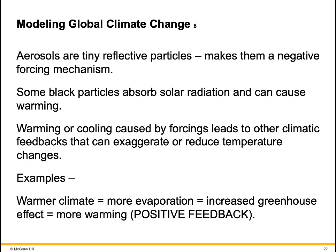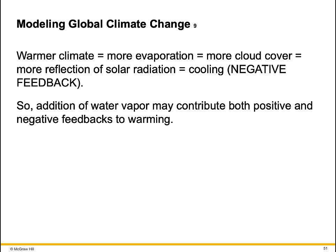Warming or cooling caused by forcings leads to other climatic feedbacks that can exaggerate or reduce temperature changes. Example of positive feedback: a warmer climate leads to more evaporation, which leads to increased greenhouse feedback and more warming. Example of negative feedback: a warmer climate leads to more evaporation, more cloud cover, more reflection of solar radiation, and cooling. So the addition of water vapor may contribute both positive and negative feedbacks to warming.